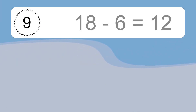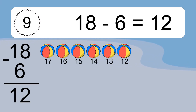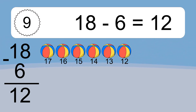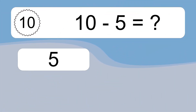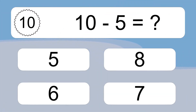18 minus 6 equals what? 18 minus 6 equals 12. Let's count it: 17, 16, 15, 14, 13, 12.